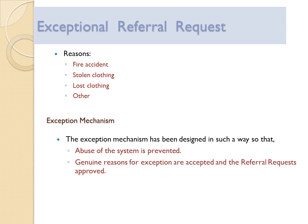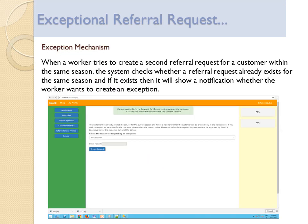Exceptional Referral Request: reasons for exception include fire accident, stolen clothing, lost clothing, or other reasons. The exception mechanism has been designed to prevent abuse of the system while ensuring genuine reasons for exceptions are accepted and the referral request is approved. When a worker tries to create a second referral request for a customer within the same season, the system checks whether a referral request already exists for that season, and if it does, it will show a notification asking whether the worker wants to create an exception.